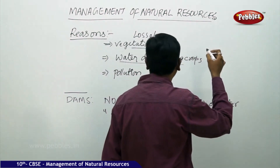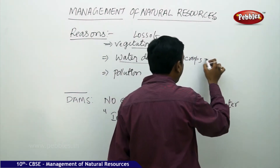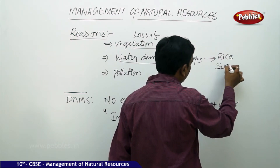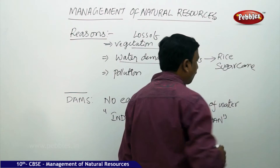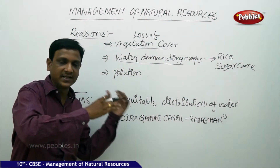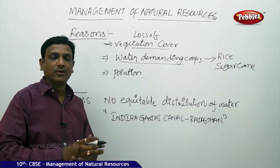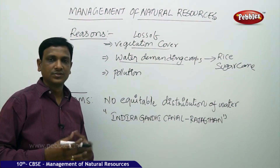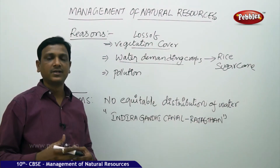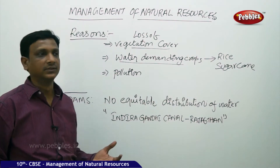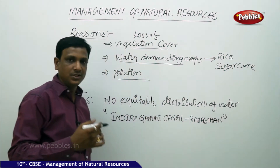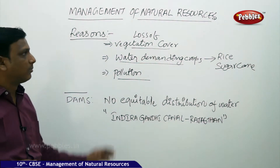The second reason is diversion of water for water-demanding crops. Take rice and sugarcane — these are crops that need a lot of water to grow. In some places, water is diverted to these crops which take a lot of water, so other places may not get proper supply. There is no equitable distribution of water. The third reason is pollution — releasing effluents and wastes into the water is also one of the problems for the water crisis.